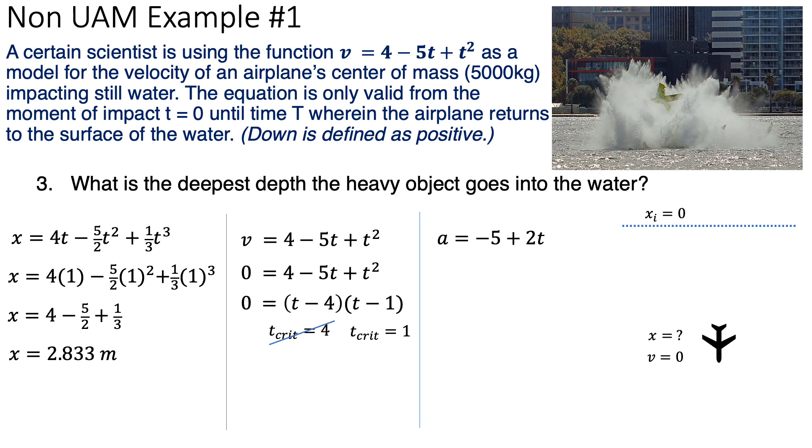Now, how do I know that's the maximum depth, the deepest depth? Well, I plug in my value t equals 1 into my acceleration formula. Come to find out that the acceleration is negative 3. So, if my acceleration is negative 3, that means I have a concave down form on my position time graph. And therefore, yes, indeed, I have calculated a maximum value.